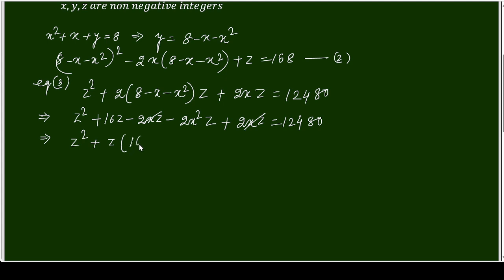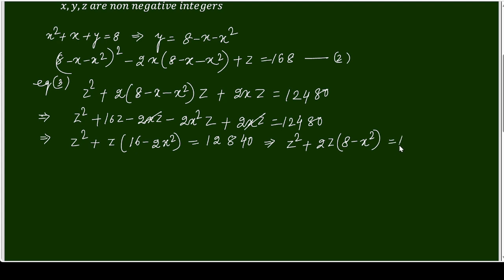After taking 2 common, I am getting z(8 − x²) ... simplifying to z² + 2z = 12840. But opening this again makes it difficult to solve. Since the numbers are very large, I will try small non-negative integers starting from x = 0.